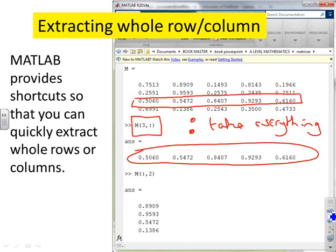Equivalently, I could write a command something like M(colon, 2). And now you'll see the colon is before the comma, so that says take all the rows, but I want the second column. So if you look here, all the rows, second column is that one, and those are the values that it's given.